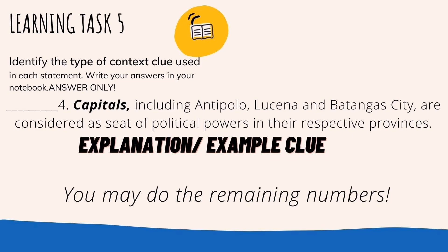Learning task 5 states: read the sentences below, identify the type of context clue used in each statement, and write your answers in your notebook. On each sentence, you will see bold or highlighted words. For example, on number 4: